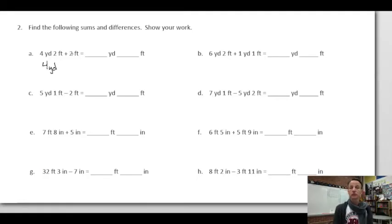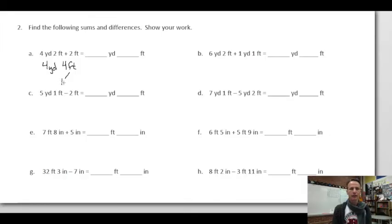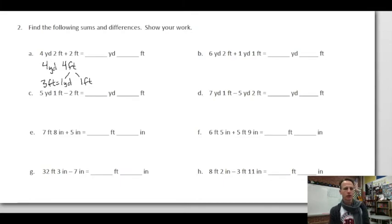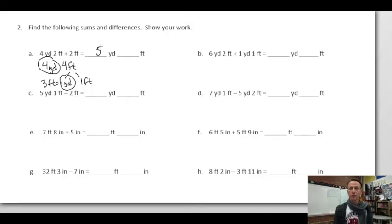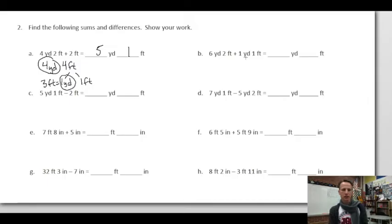Four yards two feet plus two feet: the in-between step is that two feet and two feet are four feet. From four feet, three of those feet give us one yard, leaving one other foot. We had four yards, plus this one yard, plus one foot — a total of five yards one foot.